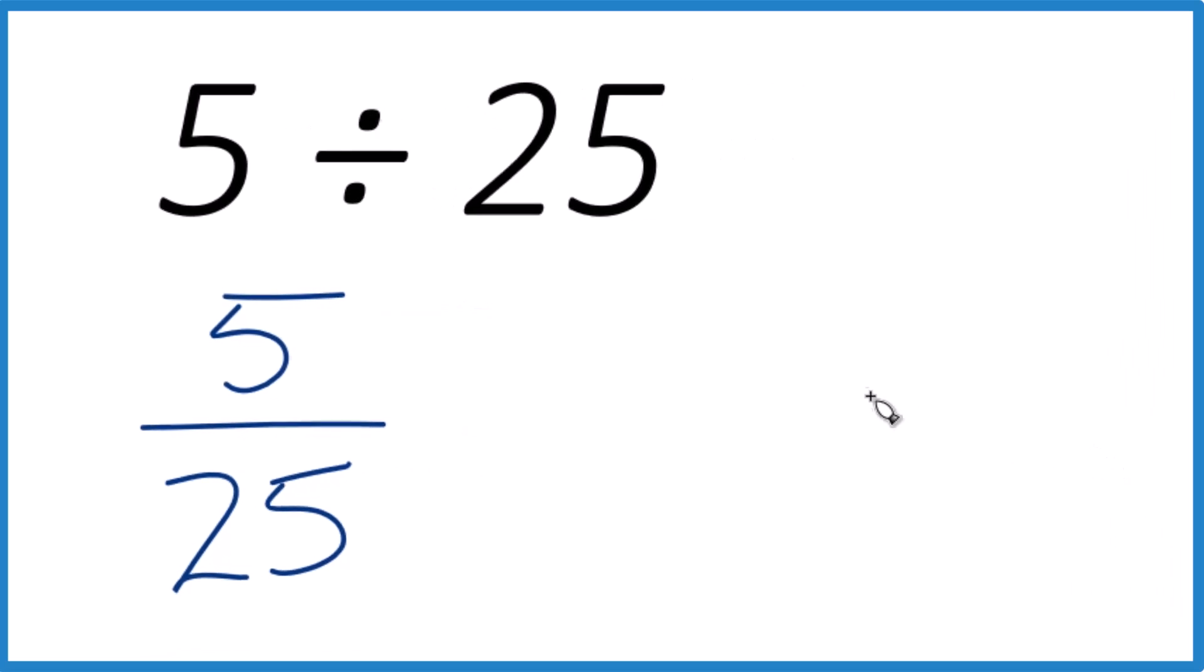So here's how we do it. We have 5, we want to know how many times 25 goes into 5. So we're doing this long division. So 25 doesn't go into 5, but we could call this 5.0.